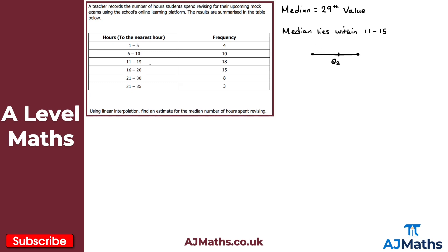The lower class boundary is 10.5 and the upper class boundary is 15.5. At 10.5, the cumulative frequency is 4 plus 10, which is 14. At 15.5, that's 14 plus 18, giving 32. Q2 corresponds to the 29th value. We set up our interpolation equation: (Q2 − 10.5) / (15.5 − 10.5) = (29 − 14) / (32 − 14).